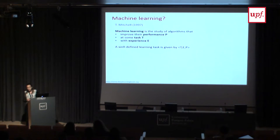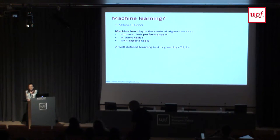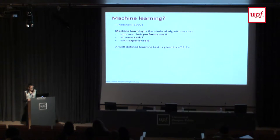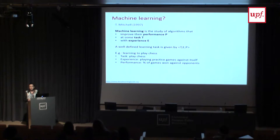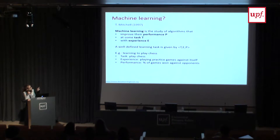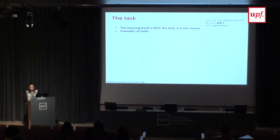The terminology of machine learning was already used in the 1950s. One of the most standard definitions is from Tom Mitchell, who says machine learning concerns algorithms that automatically improve their performance through experience. For example, learning to play chess: the task is to play chess, the learning experience is practicing by playing against oneself, and the performance measure is the percentage of games won against opponents. A learning task is well defined by this triplet: task, experience, and performance.